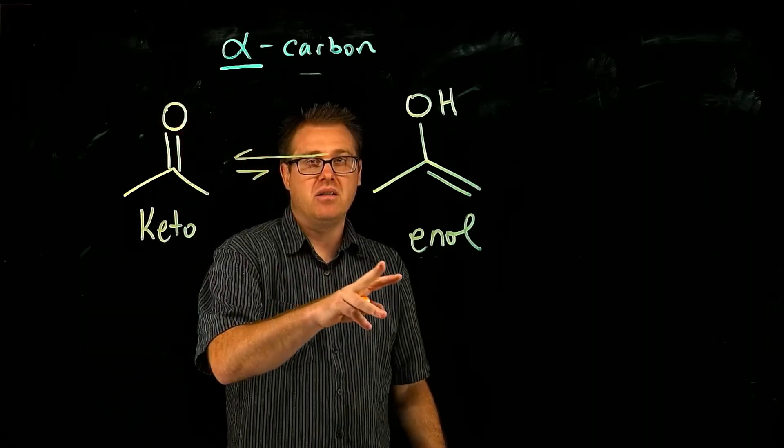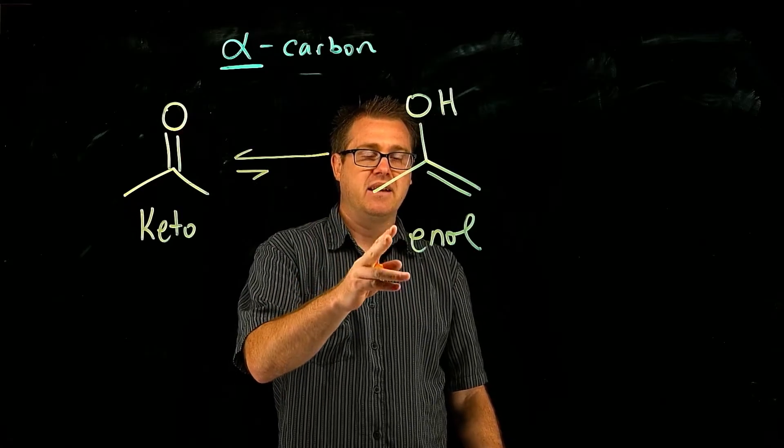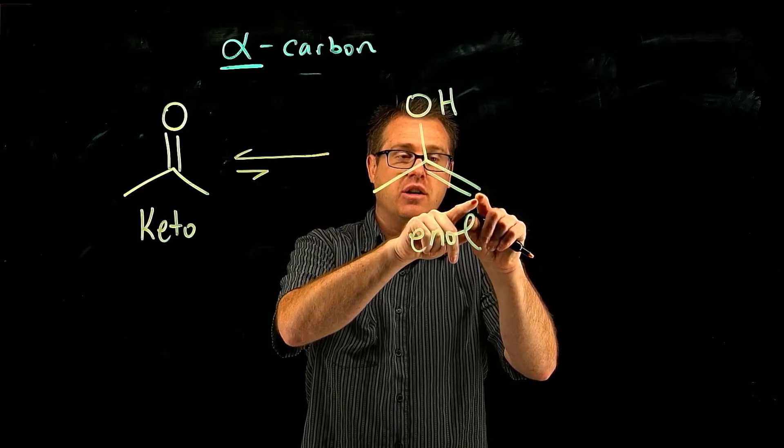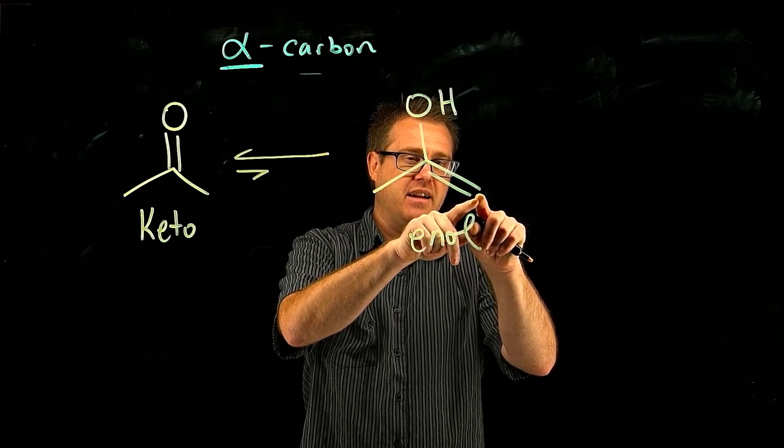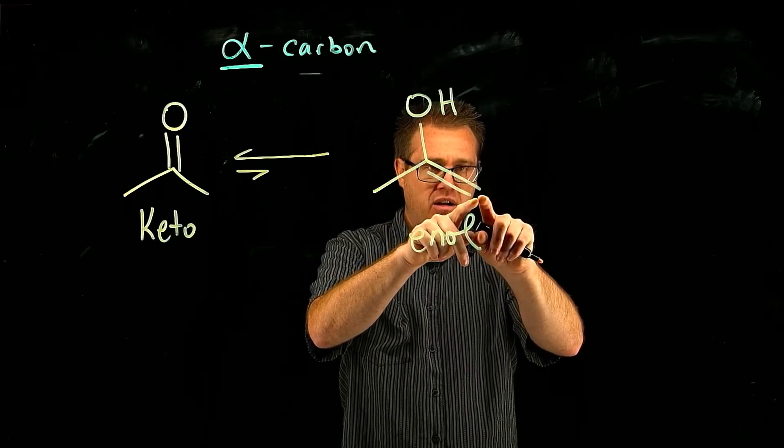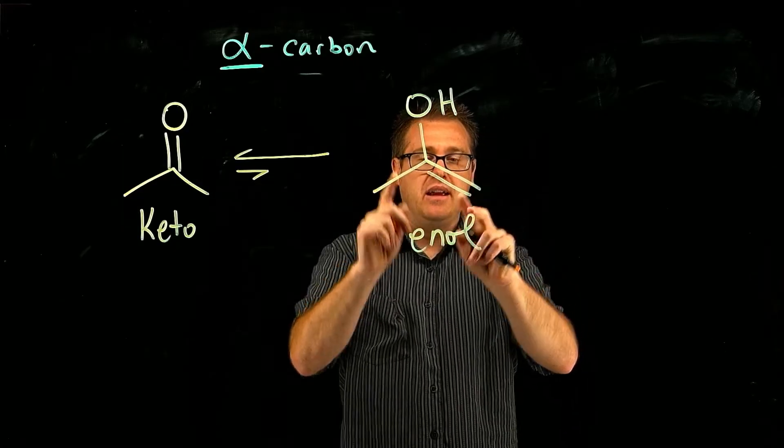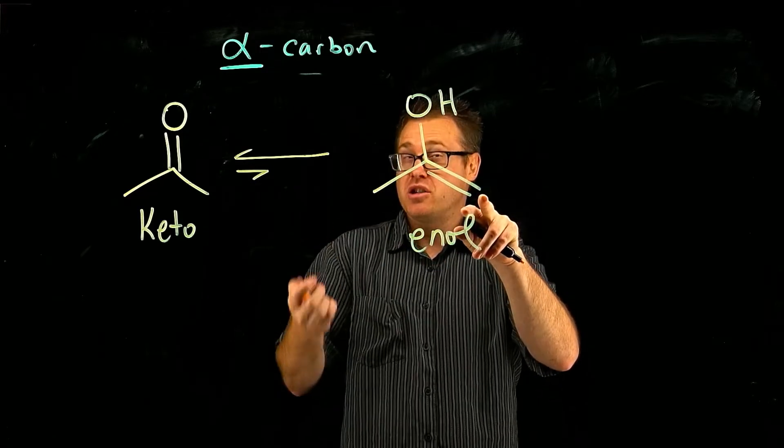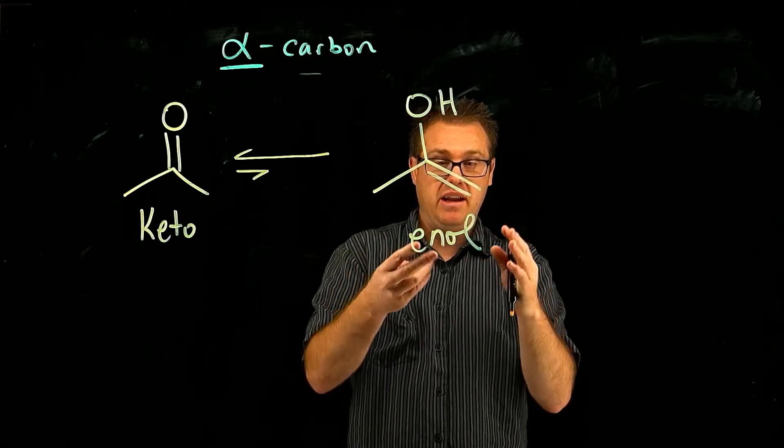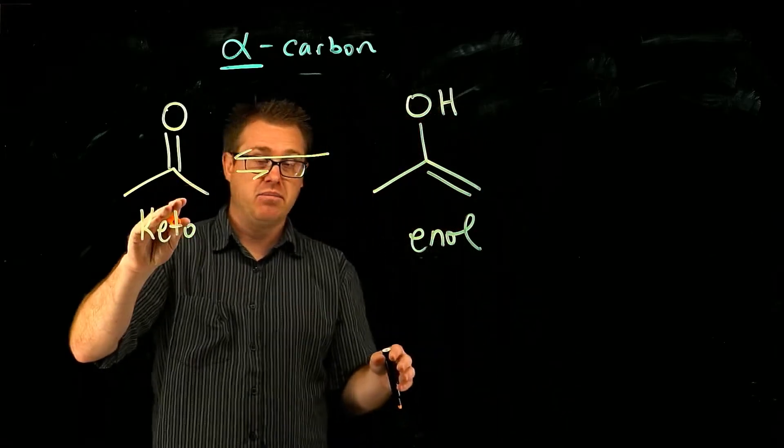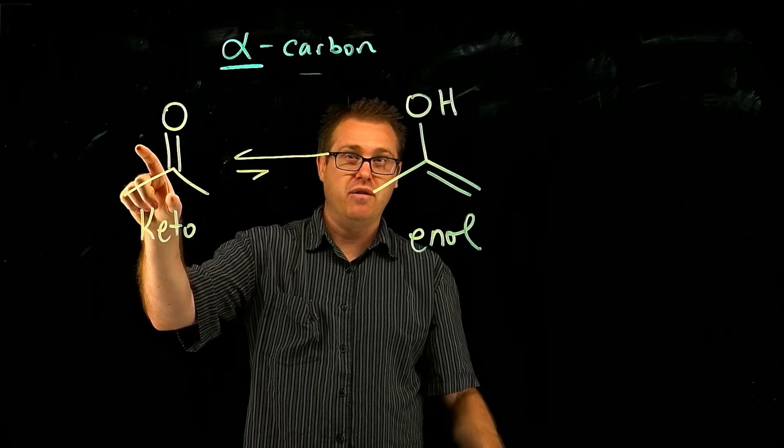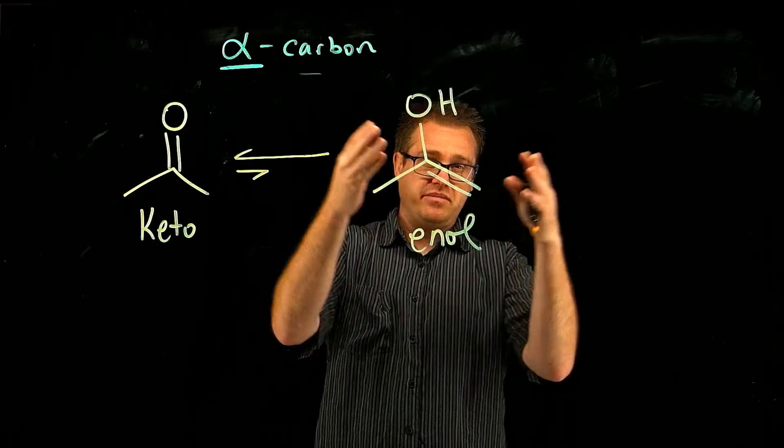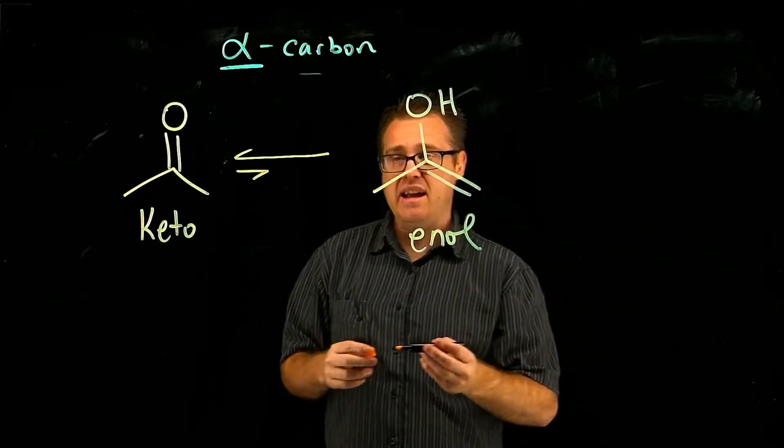Another reason why enols are less reactive than enolates is because we need that negative charge on the alpha carbon in order to react. And we can only get that negative charge there when it's in the enol form. Now in the enol form, that negative charge is only a partial negative charge, but it's something. But now we're fighting equilibrium. At equilibrium, the keto form is more stable. So you're going to get very, very little enol, which only has a partial negative. So the reactivity is just not that great.